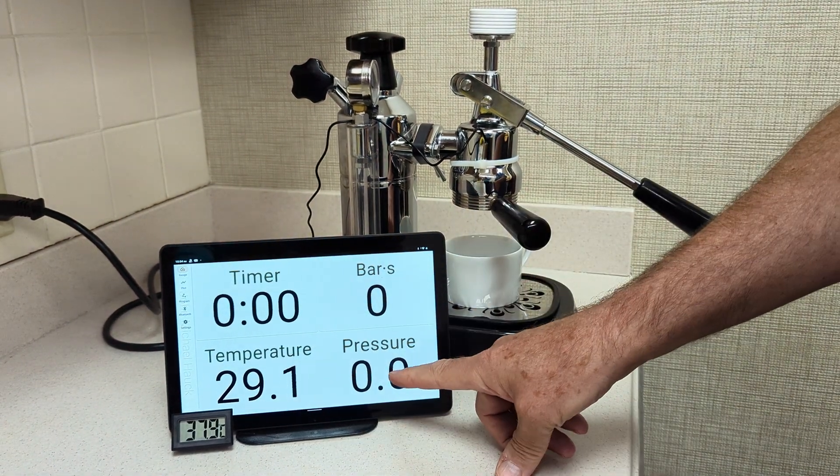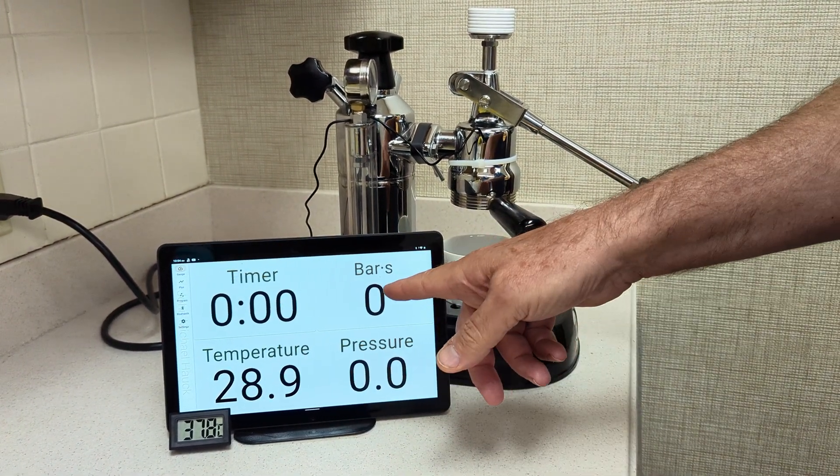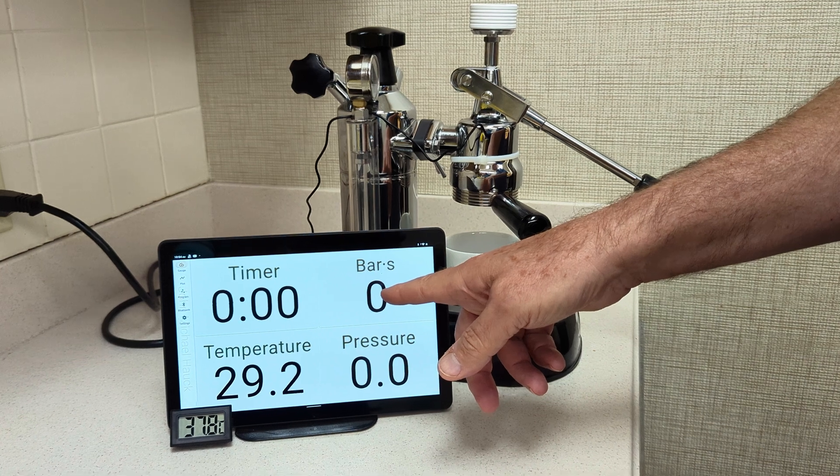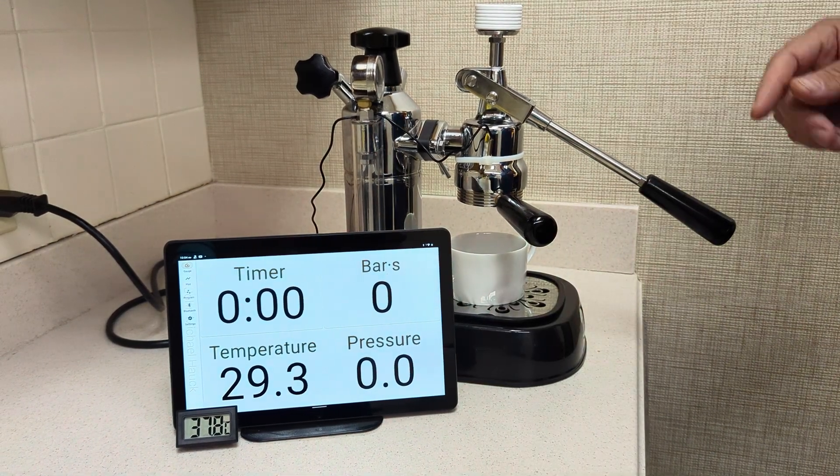This is a shot timer. This is the current pressure. And then this is something I'll explain in a little bit, but it's the amount of pressure over time.